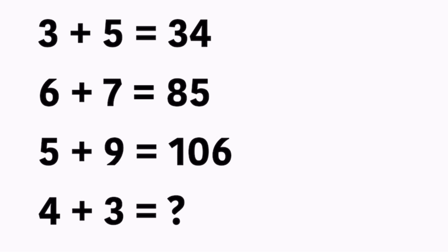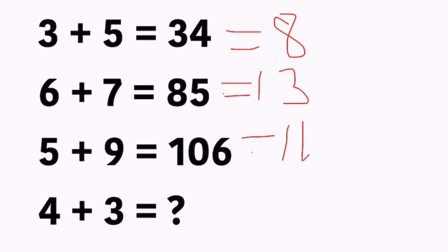Look at the question. First statement: 3 plus 5 sum equals 8, but here it's given as 34. Next, 6 plus 7 sum equals 13, but here given as 85. Next, 5 plus 9 sum equals 14, but here given as 106. Now, 4 plus 3 sum equals 7 — but find the question mark's value: how much will that number be?